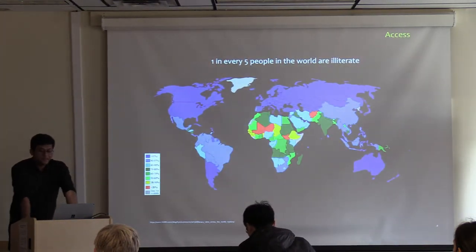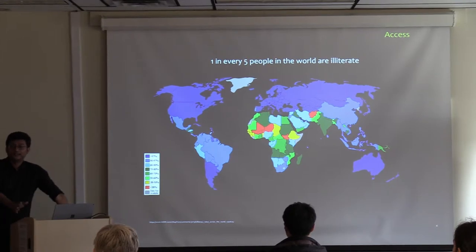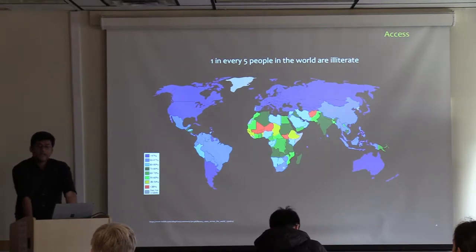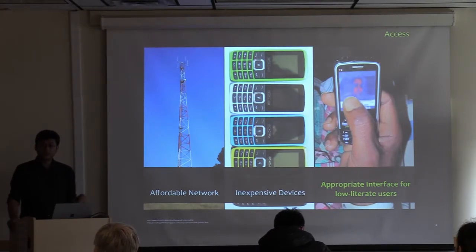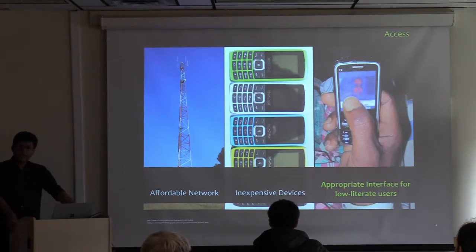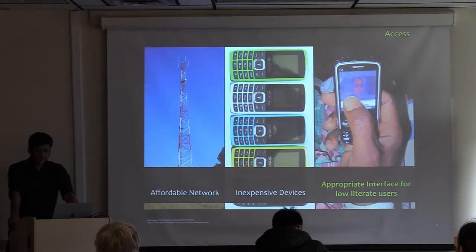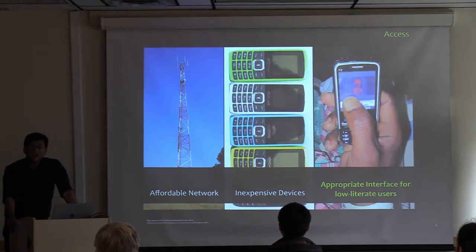One in every five people in the world are illiterate — about 20% globally. Many more are semi-literate or digitally illiterate and cannot use technology the way we do. Computer and electrical engineers have worked on making technology available to them, and now even poor people can have a mobile phone. But the interface is still not good enough for illiterate people to use. If you cannot read and write, how are you going to use your mobile phone no matter how cheap it is?